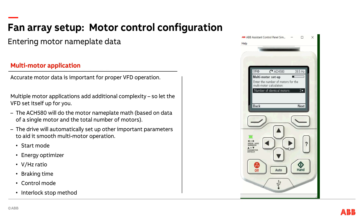I'm going to enter into the drive how many motors I have for this application. I'll just say it's a small two-fan array, so simple two motors here. But I could hit the right arrow and change this all the way up to 18 motors. Technically the drive could run more than 18 motors, but at some point application-wise, does it make sense for a single drive to run all 18 motors? Or should we go with one drive per row, one drive per column, or a checkerboard approach to that fan array? So we limited it to 18 for this particular functionality.